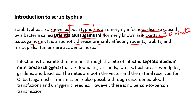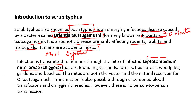Scrub typhus primarily affects rodents, rabbits, and marsupials; humans are the accidental host. The larva is the most infective stage — specifically the infected Leptotrombidium mite larva, also known as chiggers. When this larva bites a human, inoculation begins at that site. As the larva matures into an adult and then forms larvae again, the infected arthropod can continue transmission.